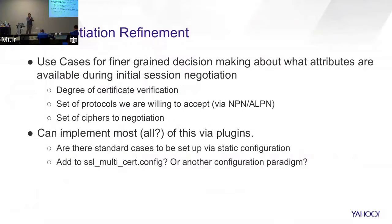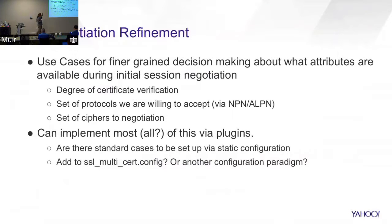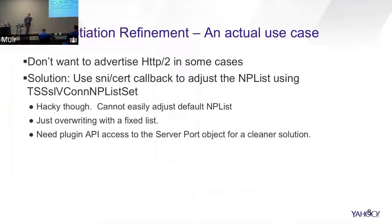Another recurring topic is SSL negotiation refinement — or 'early intervention' as Alan calls it. There are many use cases for making finer-grained decisions about SSL session negotiation attributes: how much certificate verification you're willing to do, what protocols to accept (like whether to offer HTTP/2), and what ciphers to offer. Technically, after the client hello, there are hooks where you can adjust all of that, and it works. But it's kind of messy, and there are questions about whether we could do some of this via static configuration rather than restricting ourselves to plug-ins.